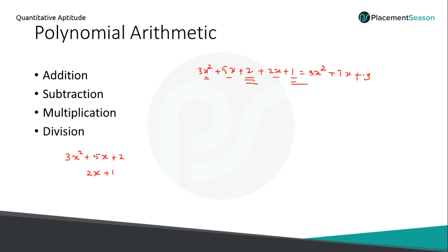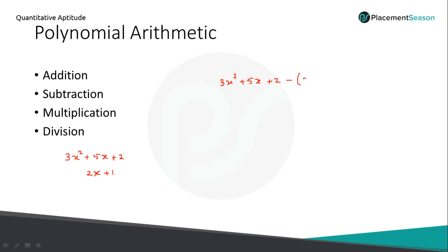Now let's discuss how to subtract two polynomials. We have 3x squared plus 5x plus 2, and we are subtracting the second polynomial 2x plus 1 from it. That is: 3x squared plus 5x plus 2 minus (2x plus 1). There is no x squared term in the second polynomial, so we write 3x squared. For the x term: 5x minus 2x equals 3x. Then 2 minus 1 equals 1. When subtracting, you subtract the corresponding terms: x squared with x squared, x with x.